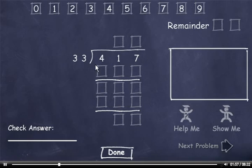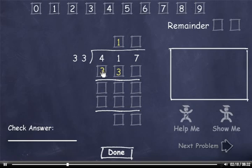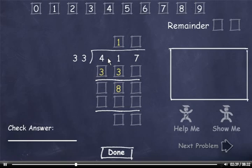417 divided by 33. 33 goes into 41 one time. 1 times 3 is 3, and 1 times 3 is 3. I can't subtract 3 from 1, so I'll have to borrow. 11 minus 3 is 8. I borrowed from this 4, so it's now a 3. 3 minus 3 is 0. I'll bring down the 7.